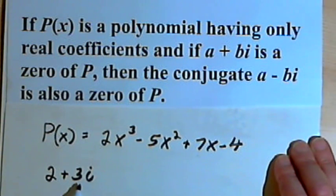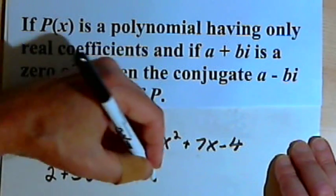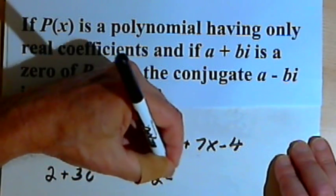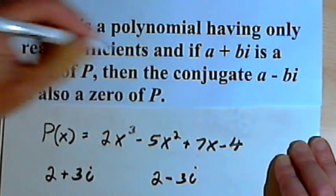It's got an imaginary number in it. Well, if that's the case, then that means there's going to be a second zero, which is the pair to this. It's what we call the conjugate pair. It would be 2 minus 3i.